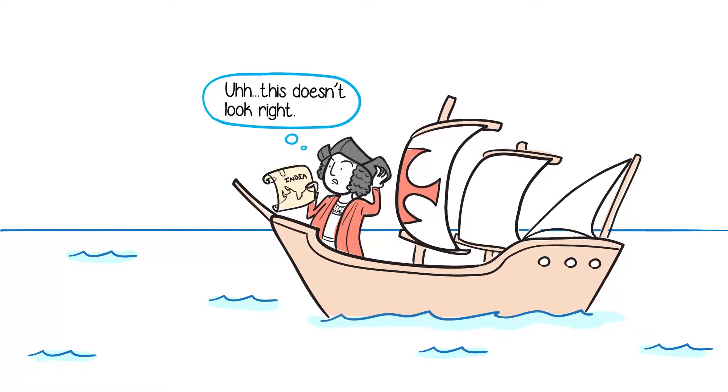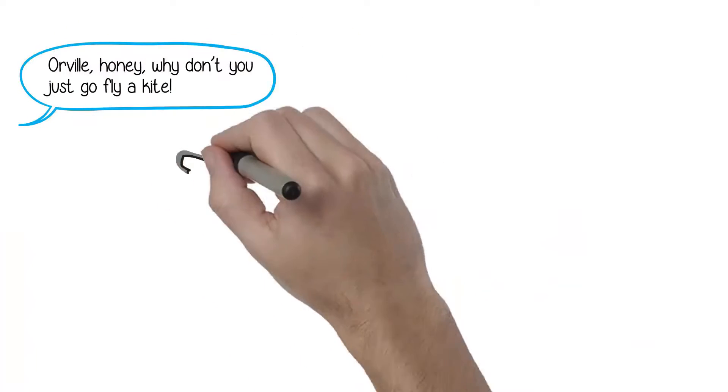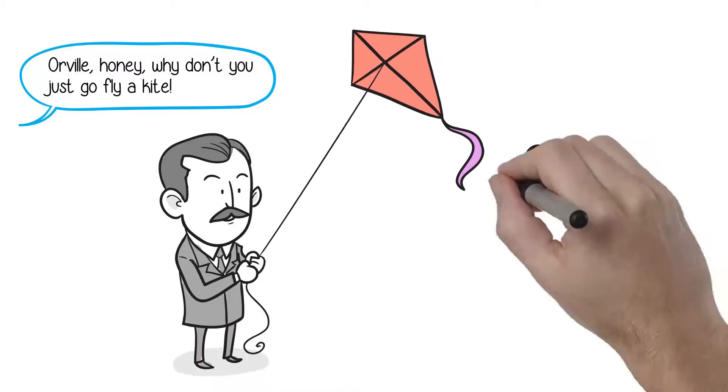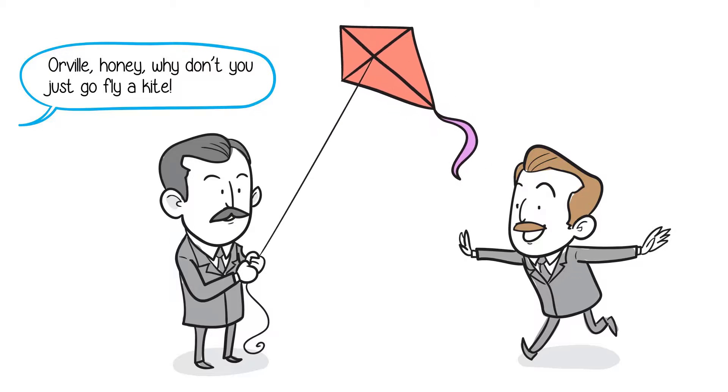Christopher Columbus didn't have a GPS, but he discovered America while searching for India. Orville Wright didn't have a pilot's license, but he discovered how to use aircraft controls to make fixed-wing powered flight possible.